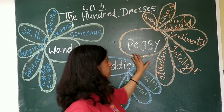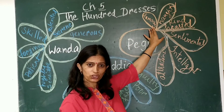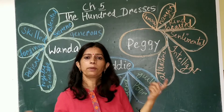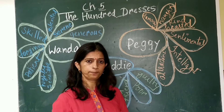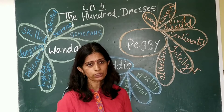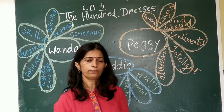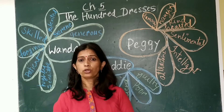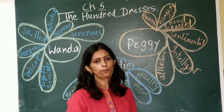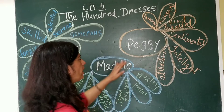Peggy, as we all know, was very famous in the class. She was the girl who was liked by everyone. The reason was that she was rich, had good clothes to wear, and most importantly, she was liked by all for her qualities as well — not only because she was rich.